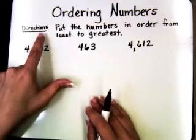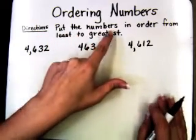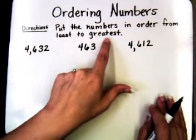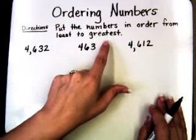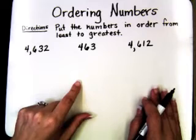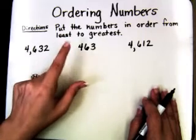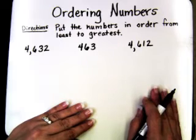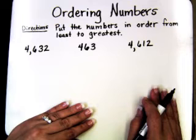The directions here say: put the numbers in order from least to greatest. Be very careful because sometimes the directions say put them in order from greatest to least. It is very important when you're ordering numbers to read the directions very carefully, because one question can say least to greatest and the very next one will say greatest to least.